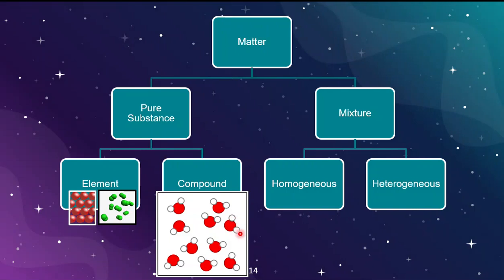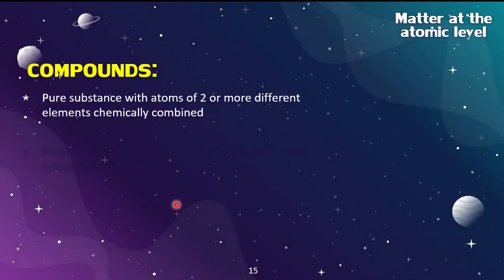Now let's take a look at compounds. See if you can distinguish why a picture would be classified as a compound versus an element. You can see a slight overlap of the circles, and more importantly, the red circle is distinctly different from the white circle — not only in color but also in size. That is representative of two different pure substances. The fact that they're chemically bonded keeps them under the category of pure substance. For a substance to be classified as a compound, there must be two different elements present and chemically bonded.